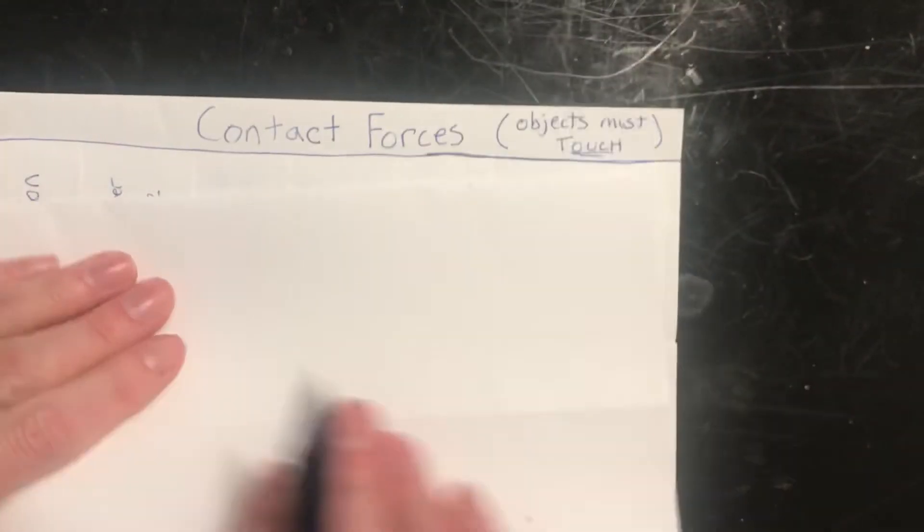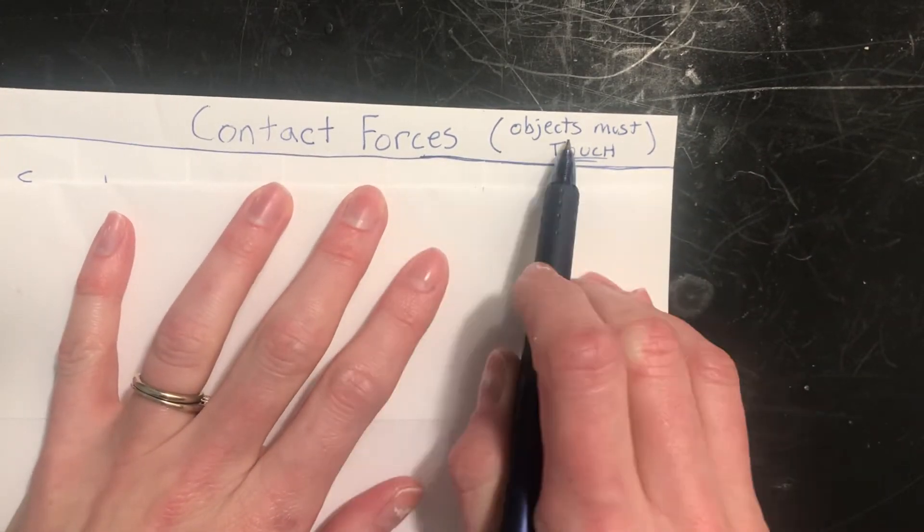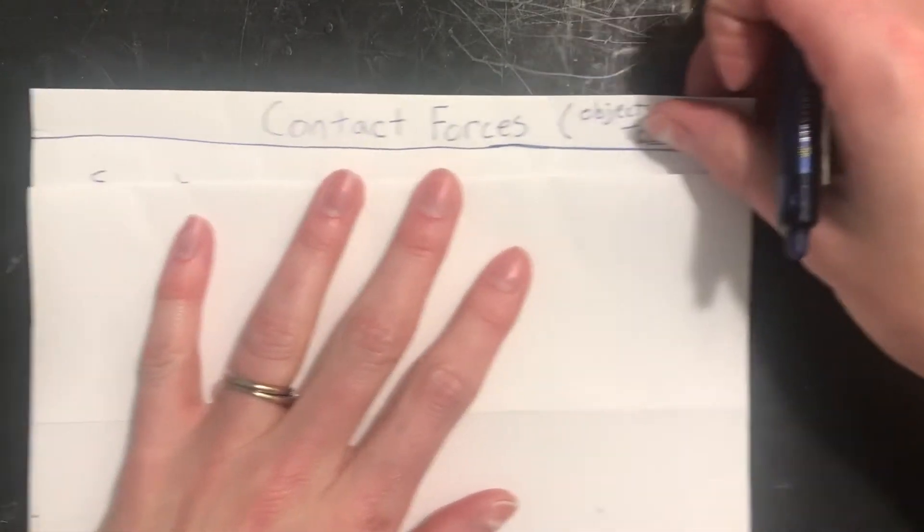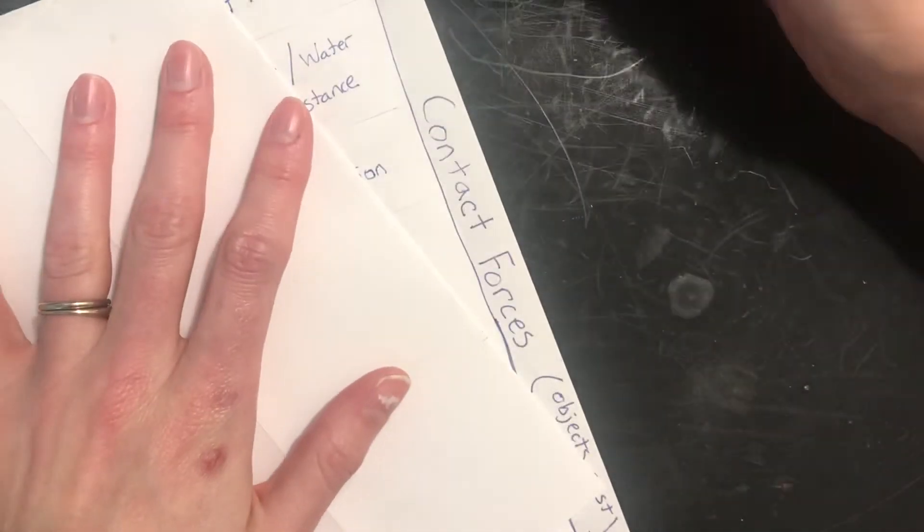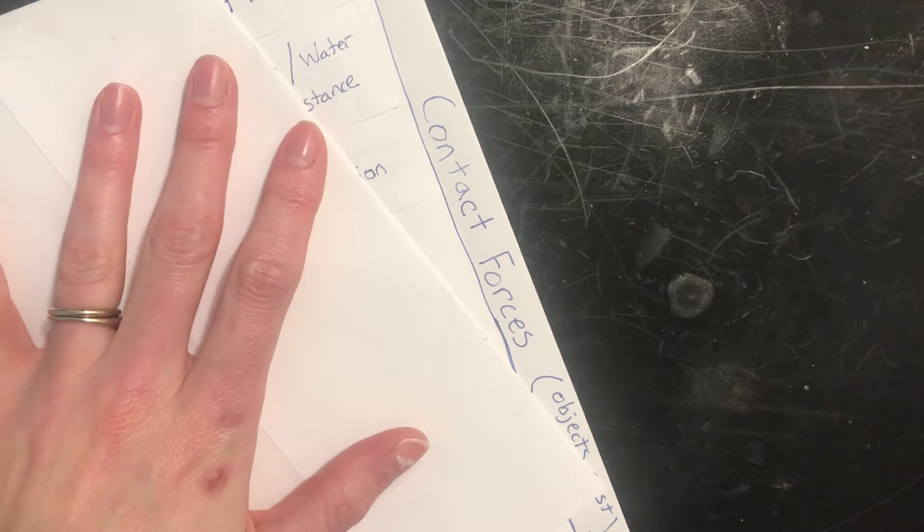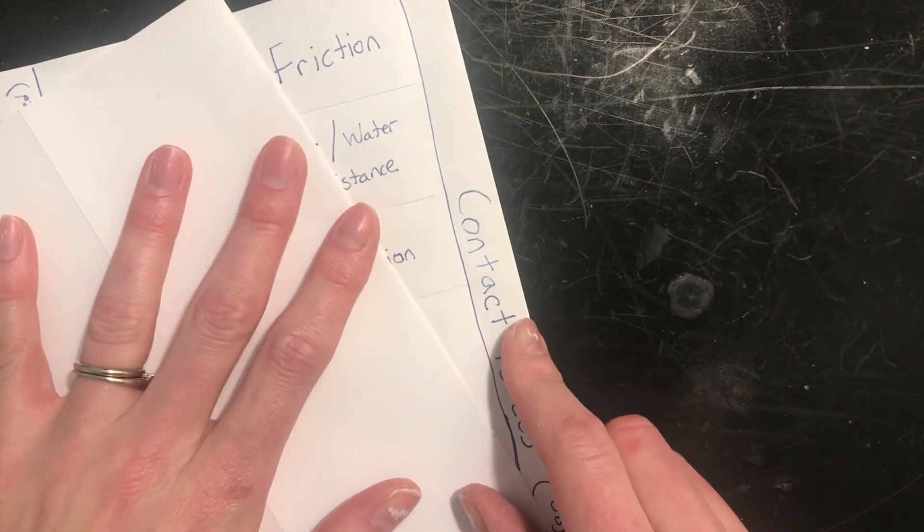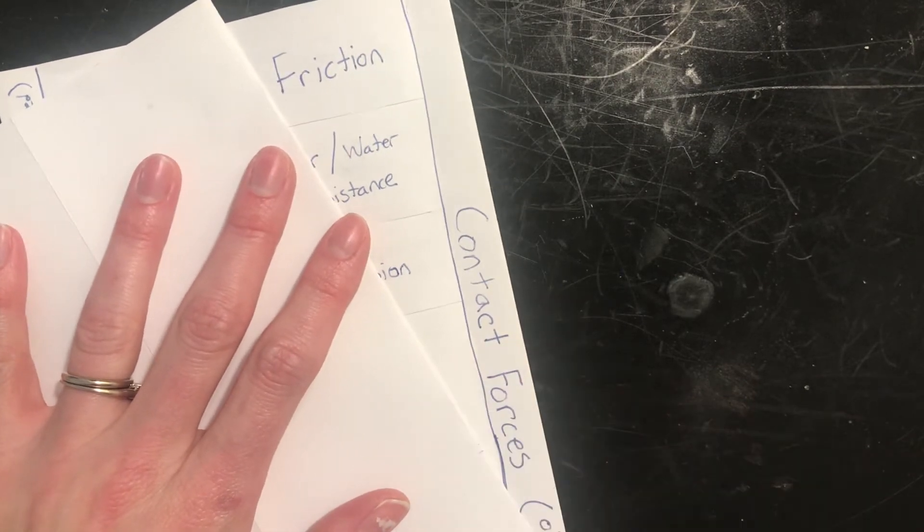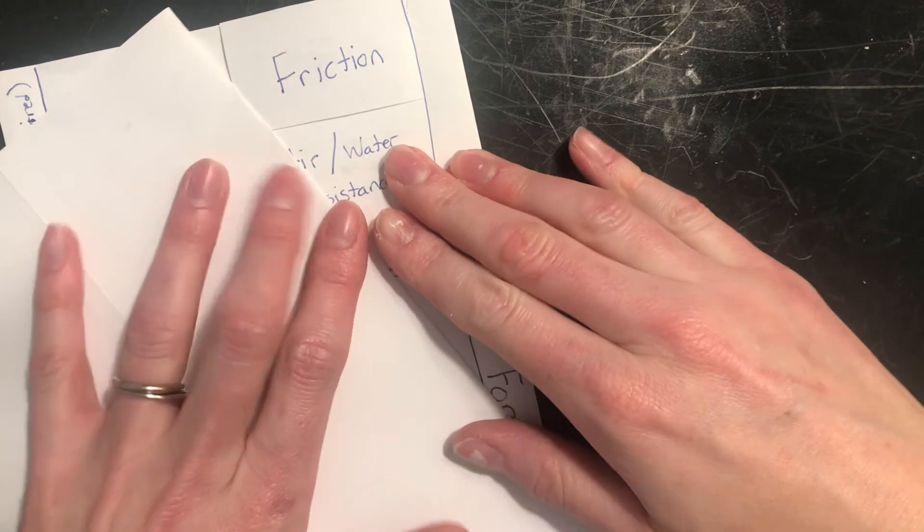On the other side we have contact forces. For contact forces, the objects must be touching. And so we've got a bunch of these, we're going to start up here at the top. These are organized in an order that it's good to check when you're drawing force diagrams, when you're analyzing forces and situations. This is a good order to go about thinking about what forces are there and whether or not you need to label them.